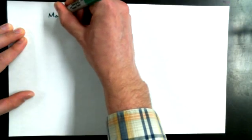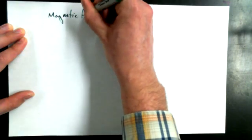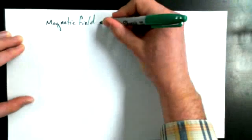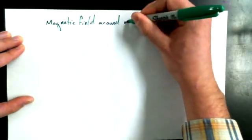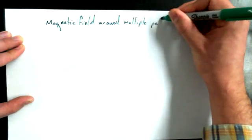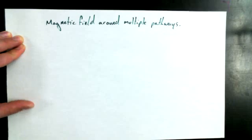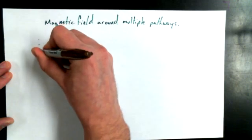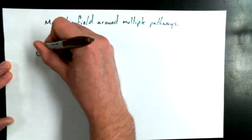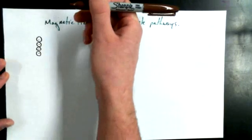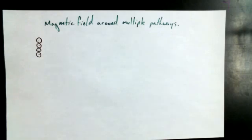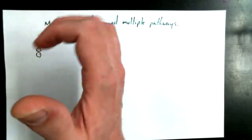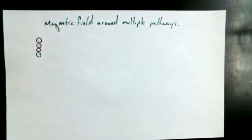Let's talk about the magnetic field not around one wire, but around multiple wires. If we have a bunch of wires going out of the page towards you — dots in the center of circles — then the magnetic field obeys the right-hand rule, meaning the magnetic field goes counterclockwise around each of those wires.